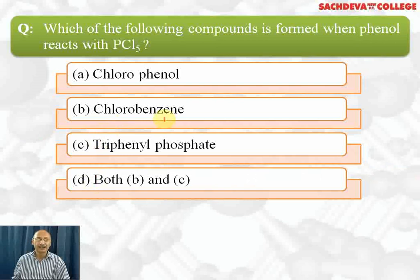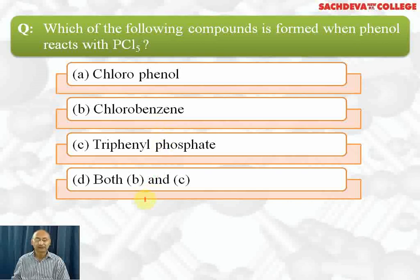Because there is double bond character between the carbon-oxygen bond, this bond will not break easily and will not be easily replaced by Cl. On the other hand, the H of phenol can be replaced very easily. The side product POCl3 that is formed reacts with 3 moles of phenol to form triphenyl phosphate. So the correct answer is both B and C. If asked for the major product, the answer is C; if asked which products are formed, the answer is D.